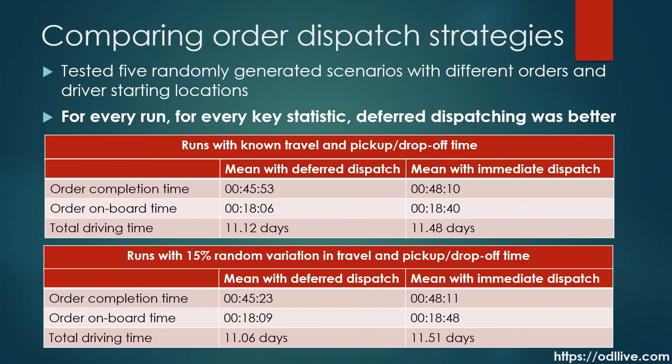We created five different scenarios by randomly generating different sets of 1,000 orders and 85 vehicles. We then looked at three key statistics. Statistic 1, order completion time, is the time between the order being booked by the customer and delivered to their doorstep. Statistic 2, on-board time, is the amount of time the meal is on board the vehicle getting cold. Our third statistic is the total driving time summed over all drivers. ODL Live was configured to minimise all three statistics, taking into account their relative importance. We found that for every run and every key statistic, deferred dispatching gave better results than immediate dispatching.